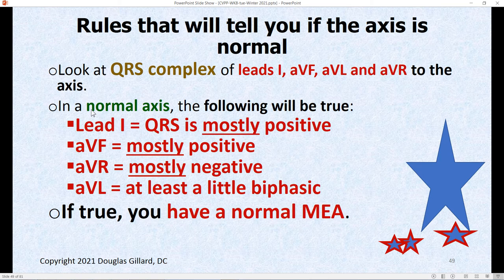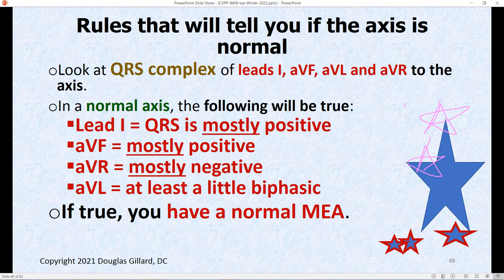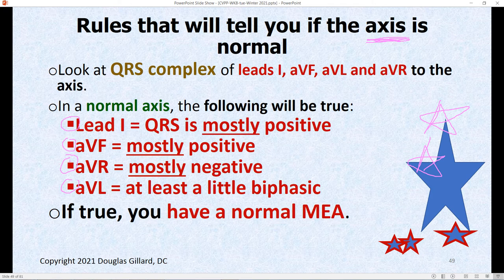Some fun facts: the normal mean electrical axis of the ventricles is somewhere between zero degrees and 90 degrees on the angle of orientation wheel. If it goes past zero degrees counterclockwise into negative territory, that's called a left axis deviation. If it pushes past 90 degrees — to 100 or 120 degrees — that's too far clockwise and that's called a right axis deviation. To have a normal mean electrical axis there are four rules: limb lead one must be mostly positive, the peeper AVF must also be mostly positive, AVR must be mostly negative, and AVL must be a little bit biphasic.